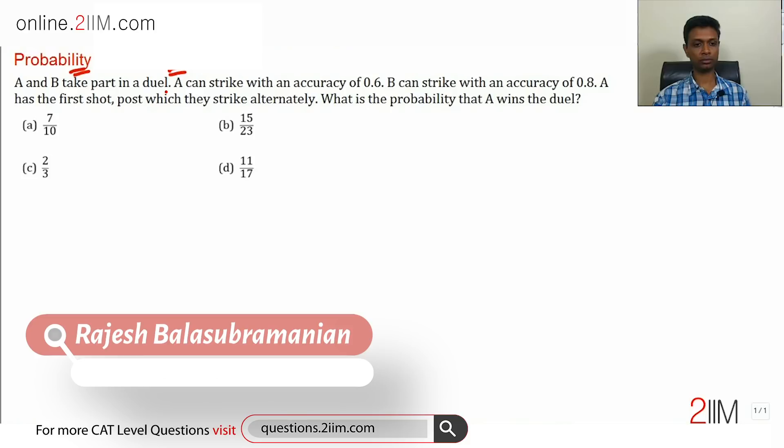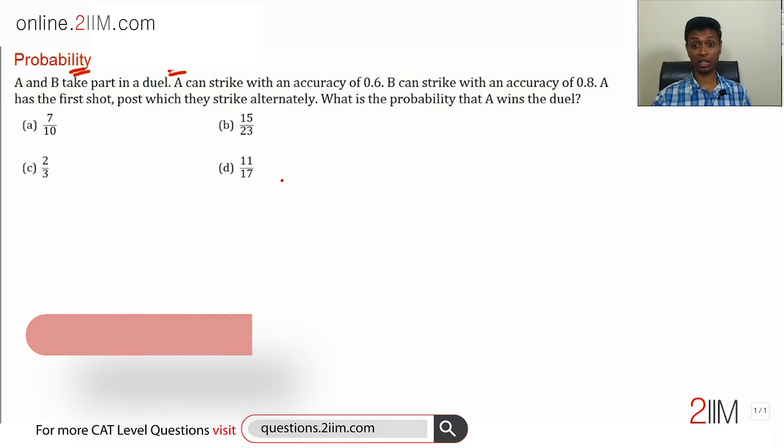A and B take part in a duel, a fight where one person shoots and then the next shot is taken by the other person. They keep shooting. A can strike with an accuracy of 0.6, B can strike with an accuracy of 0.8. A has the first shot, post which they strike alternately.